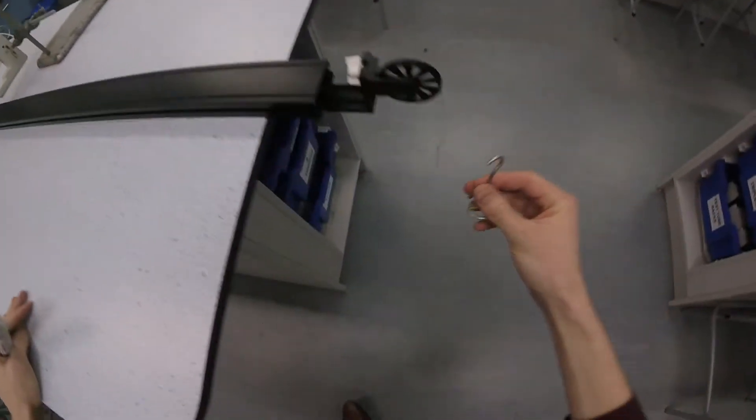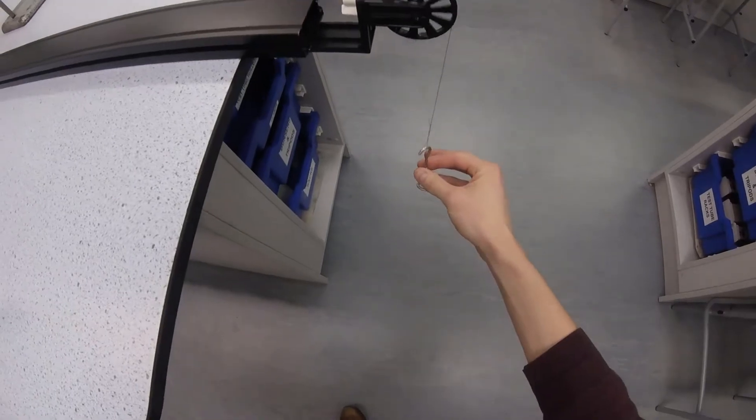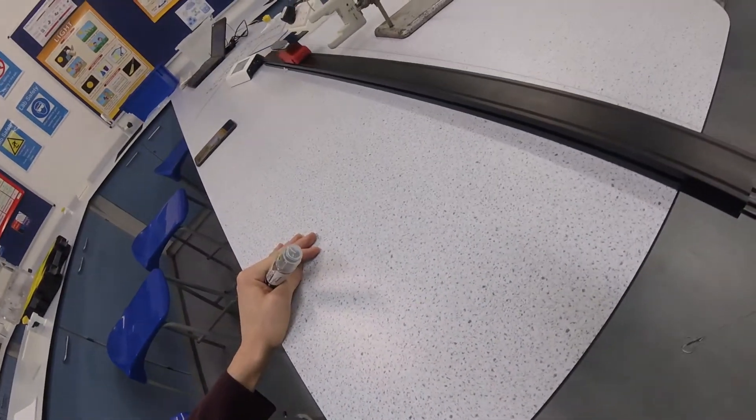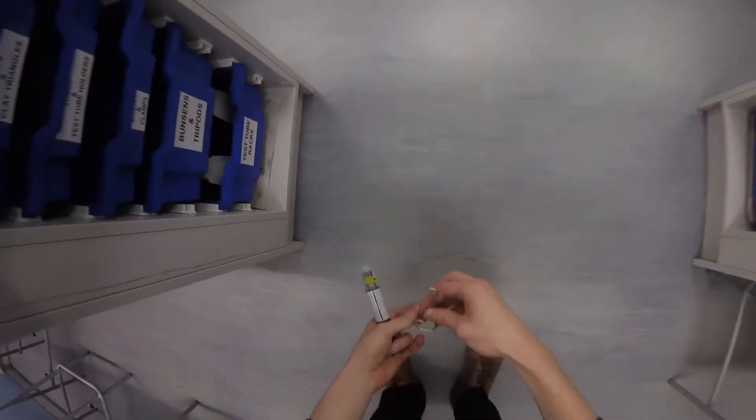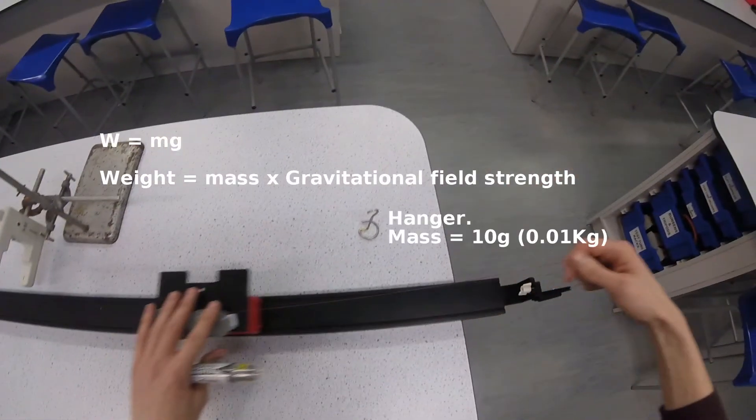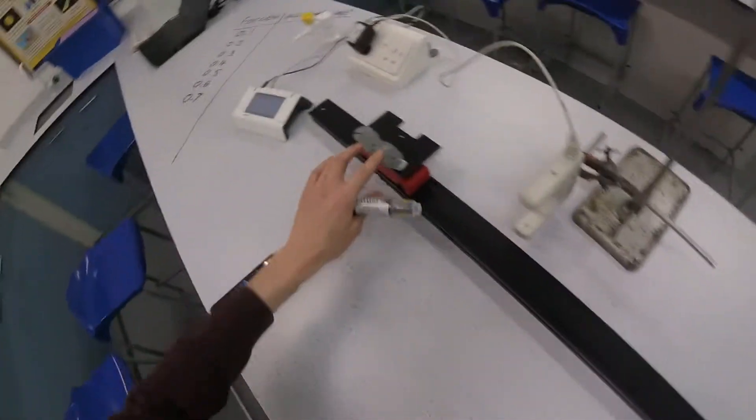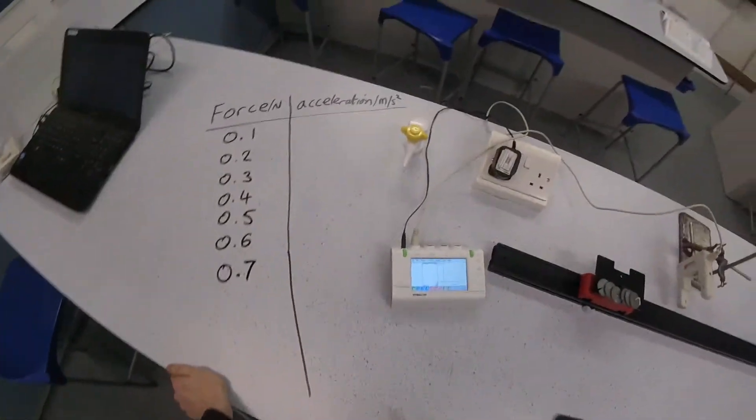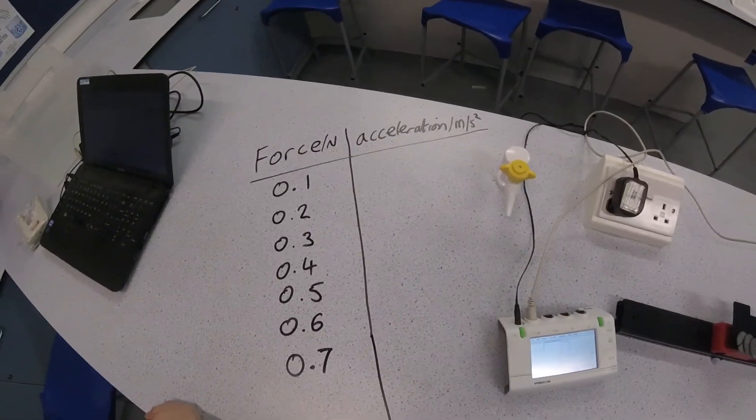Weight is going to be given by the mass of the slotted masses hanging from the end of this string on this pulley. We get the weight from mass times gravitational field strength. That hanger has a mass of 10 grams, which correlates to a weight of 0.1 newtons. In the first column, I'm going to record the acceleration.